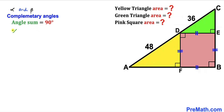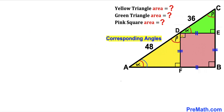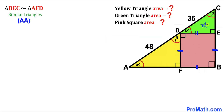In other words, alpha plus beta must equal 90 degrees. This angle is alpha; since this is a 90-degree angle, this adjacent angle is beta. We can then identify all corresponding angles throughout the figure. Since corresponding angles are congruent, we conclude that the green triangle DEC is similar to the yellow triangle AFD, according to the angle-angle similarity theorem.